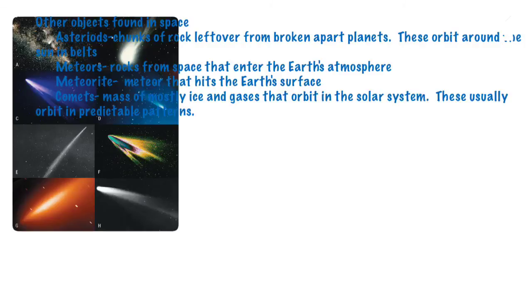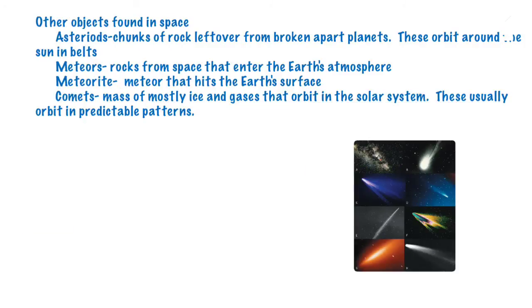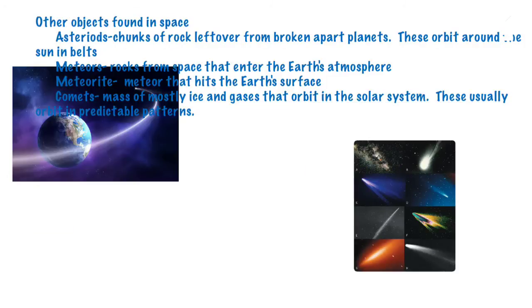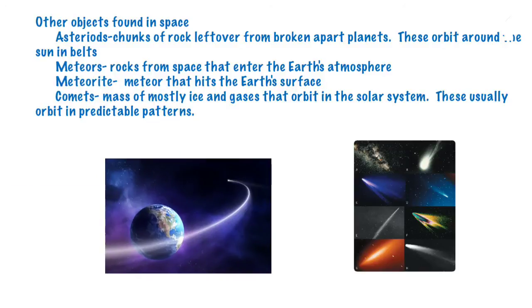Lastly, comets are mostly made up of ice and gases that orbit in our solar system in a regular pattern.